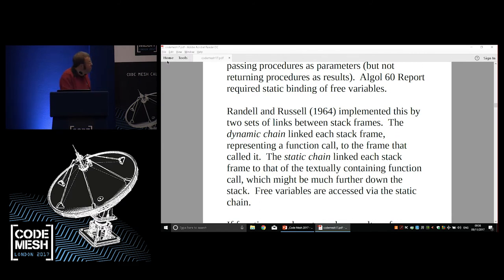Randall and Russell's 1964 book, The Implementation of ALGOL 60, describes what I think was the first complete implementation. They used two sets of links on the stack. The dynamic chain linked each stack frame to the stack frame from which it was called. The static chain linked each stack frame to the textually containing function call, which might be much further away on the stack. The dynamic chain tells you how to return to your caller. The static chain tells you where to find the bindings of your free variables. Later, the static chain got optimized to something called the display, which was a little vector with all your free variables in.